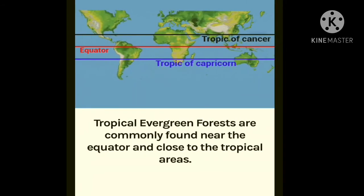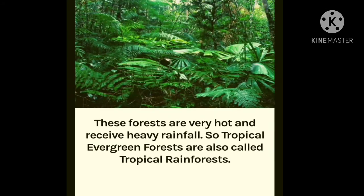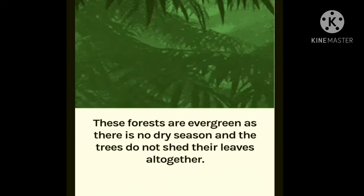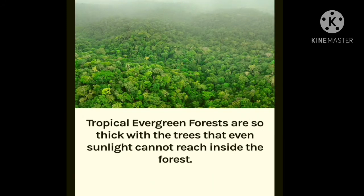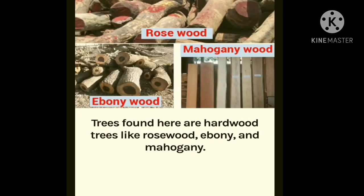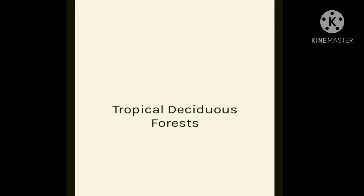Tropical evergreen forests are commonly found near the equator and close to the tropical areas. These forests are very hot and receive heavy rainfall, so they are also called tropical rainforests. They are evergreen as there is no dry season and the trees do not shed their leaves all together. These forests are so thick with trees that sunlight cannot reach inside the forest. Trees found here are hardwood trees like rosewood, ebony and mahogany.